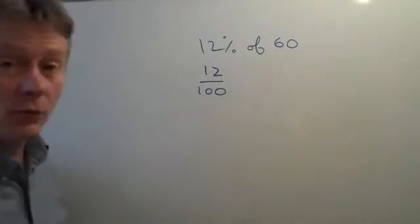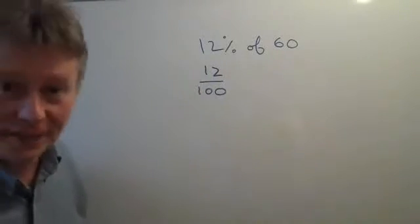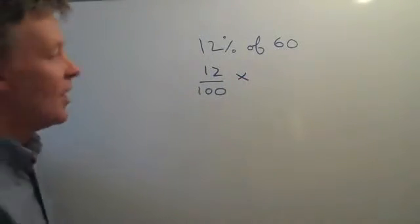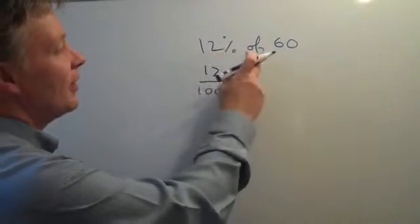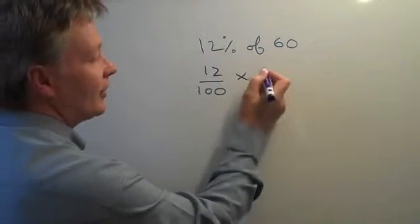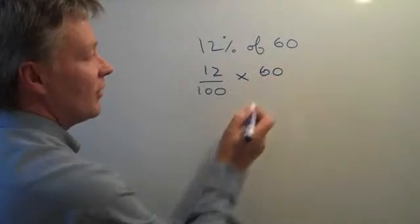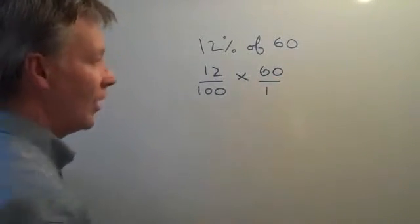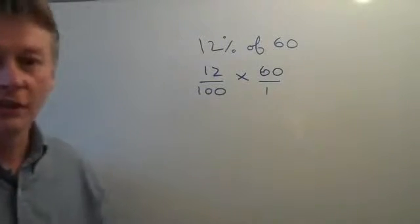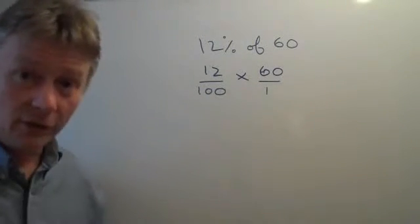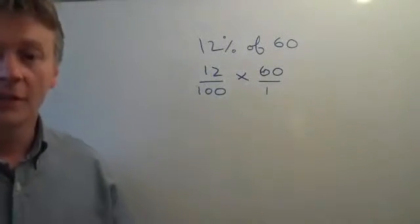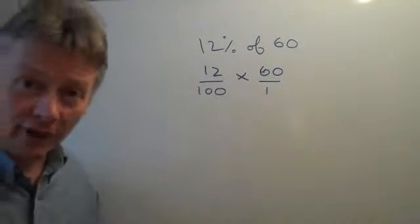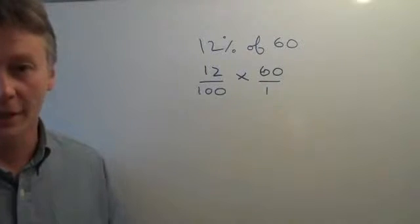And then whenever you see the word 'of', particularly in exam papers, it means multiply. So I'm writing 12% of 60. I'm going to write it as 60 divided by 1, because I want to use fractions to calculate the percentage by reducing the fraction to make it easier to manipulate and deal with.